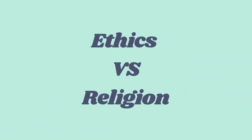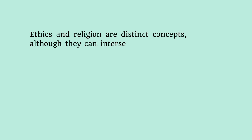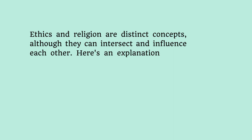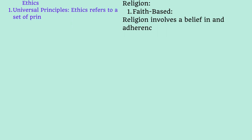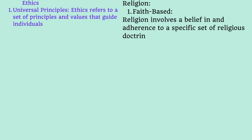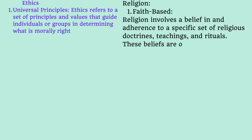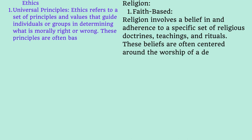Now let's see some of the differences between ethics and religion. Although ethics and religion are distinct concepts, they have certain influence on each other. Moving to the first point, the value or principle of ethics is a universal principle. If you want to determine if an action is right or wrong, it would be based on universal concepts of justice and responsibility, and it can be applied across different cultures and belief systems.